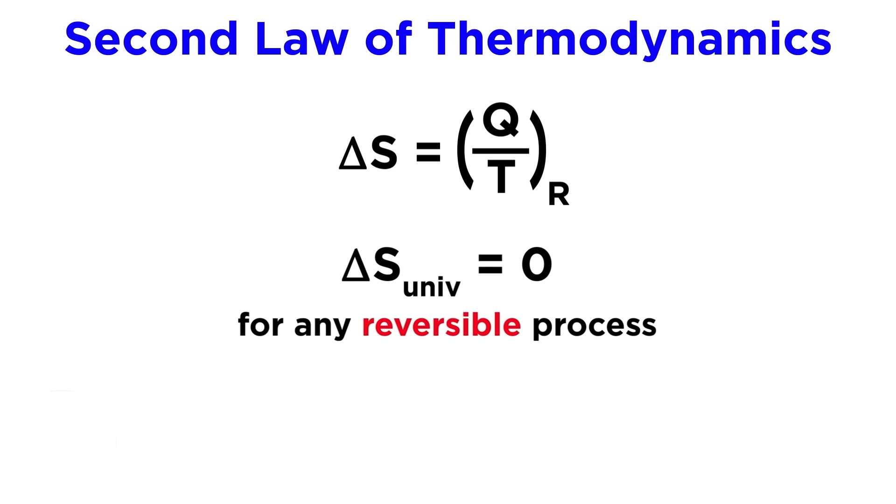But to put things into a more modern context, this law can be extended to say that the change in entropy of the universe will be zero for any reversible process, where the universe is understood to mean the system plus the surroundings.